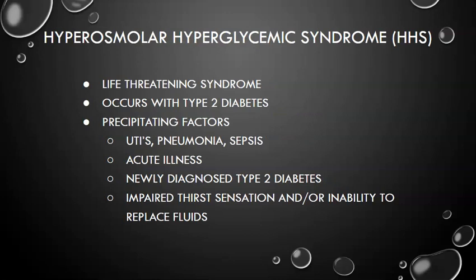Now we'll discuss hyperosmolar hyperglycemic syndrome, or HHS. This is a metabolic disorder of type 2 diabetes resulting from a relative insulin deficiency, typically precipitated by an illness that raises the body's demand for insulin. When the body can't produce enough insulin to meet that demand, hyperosmolarity and hyperglycemia result. Ketosis with these patients is typically very minimal or even absent — that is what differentiates HHS from DKA.